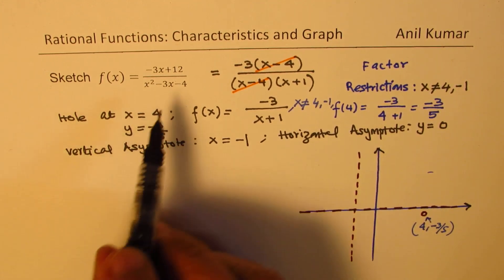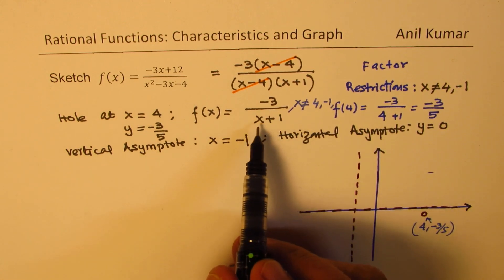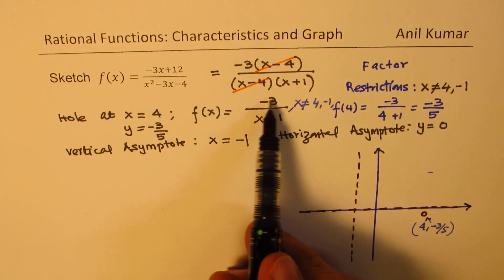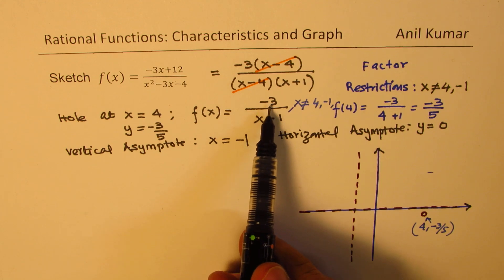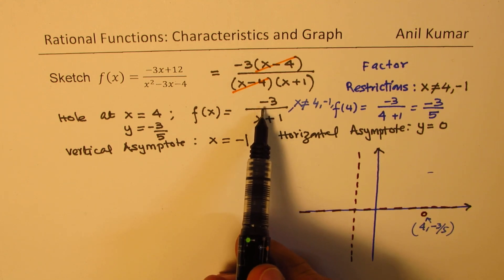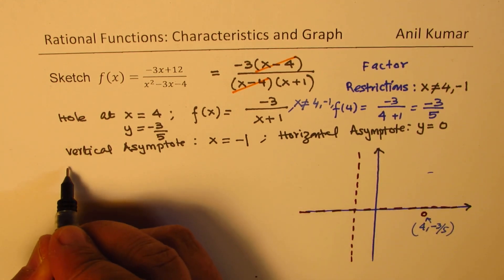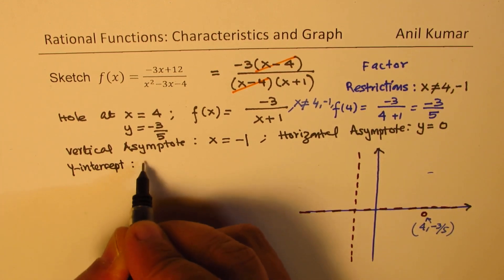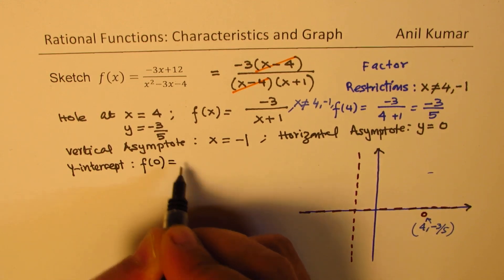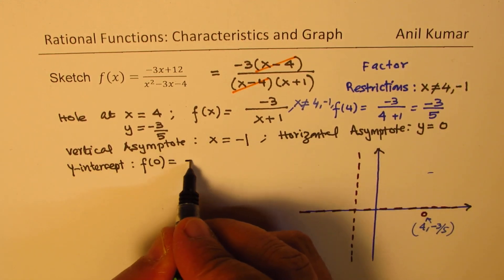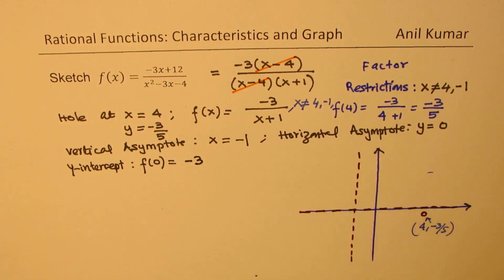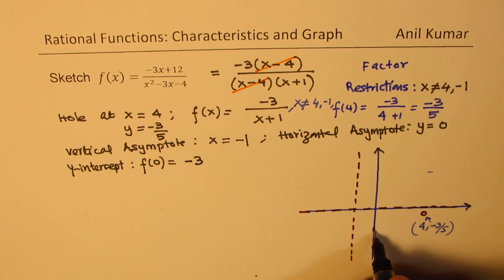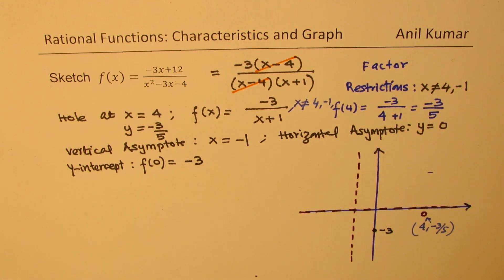The other critical points are the x and y intercepts. In this particular case, the numerator is minus 3 — a constant — so we have no x intercept. However, we do have a y intercept. The y intercept is the value of the function when x equals 0. Substituting 0, we get minus 3 over 1, which is minus 3. So the y intercept is at minus 3.